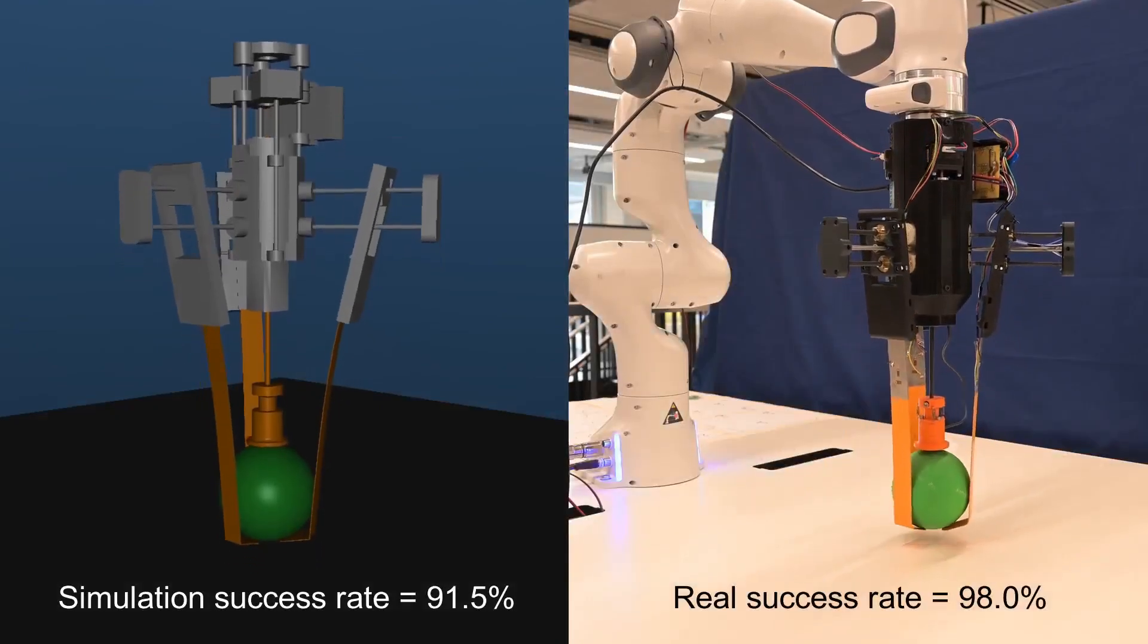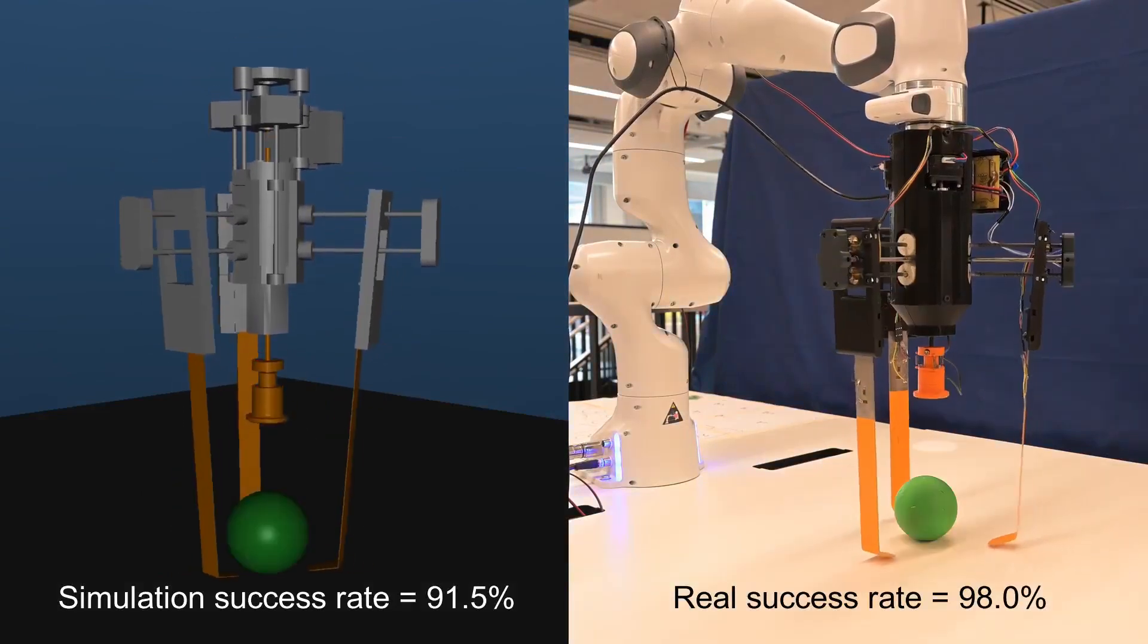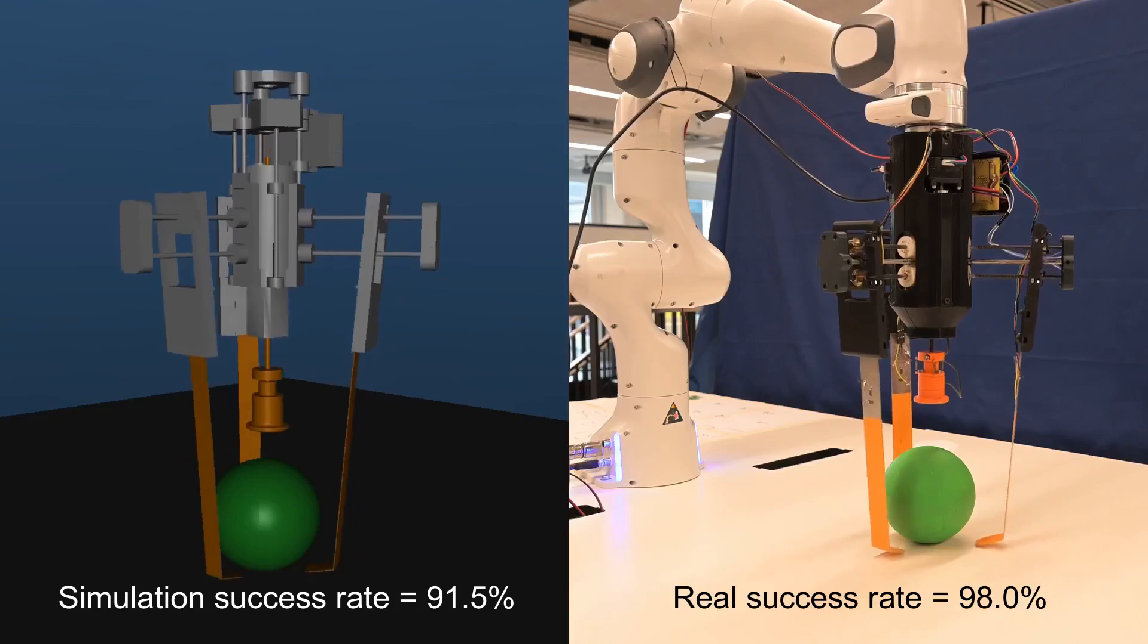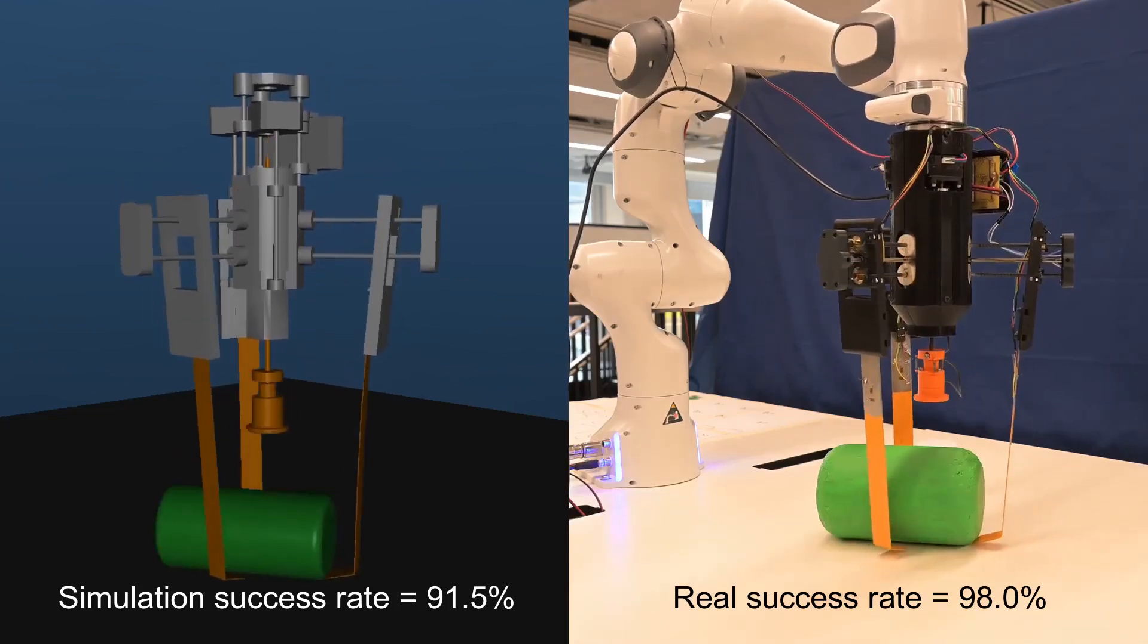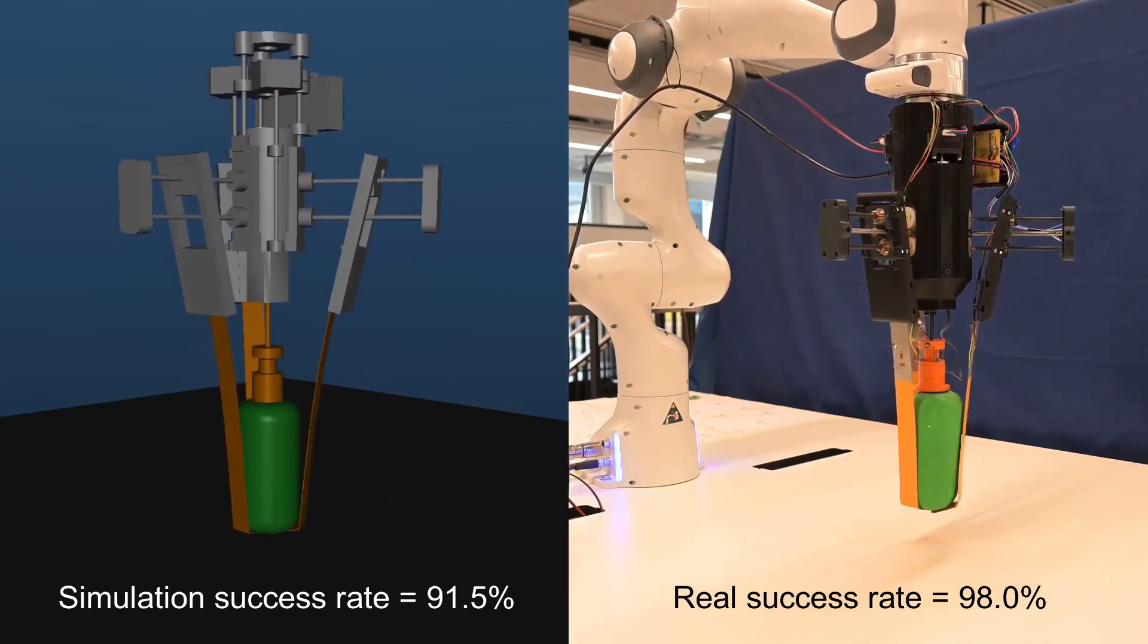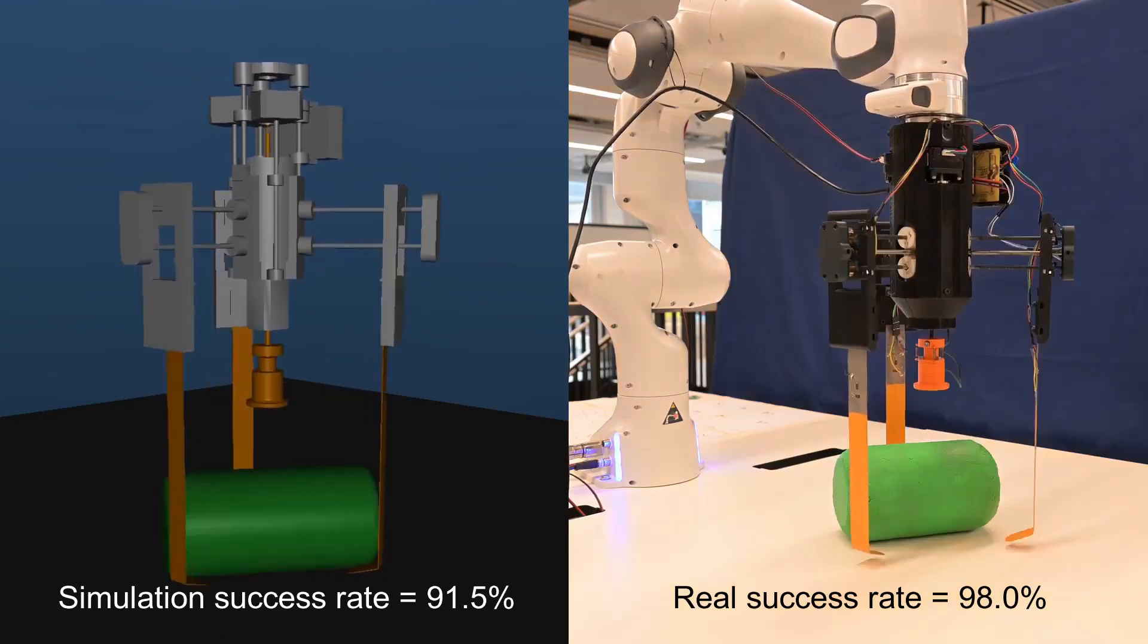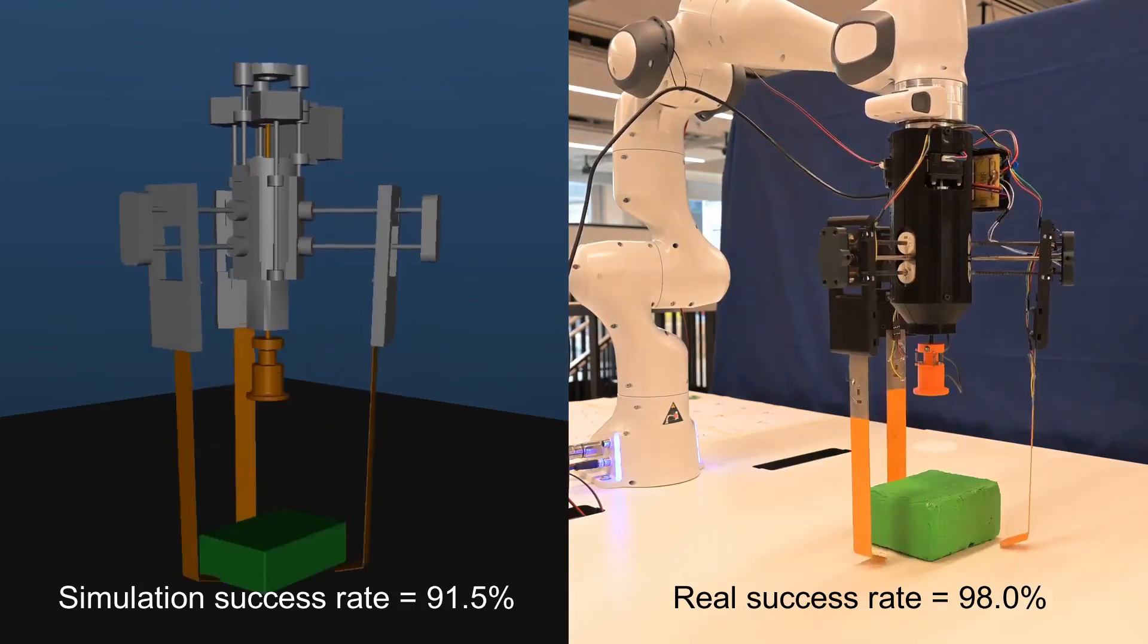Comparison of simulated and real grasping. Our compliant finger bending model gets a best simulation success rate of 91.5%. Then, we recreate in real life a version of the simulation test set to evaluate the simulation to real transfer. We achieve a best real world success rate of 98.0%.